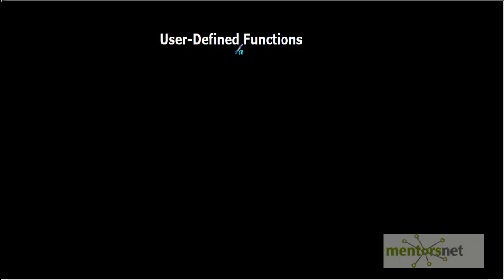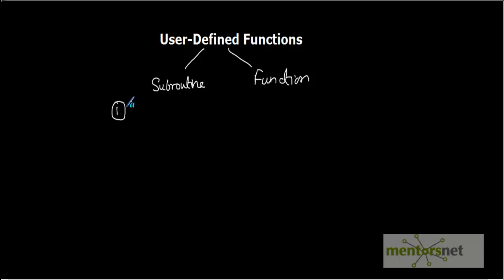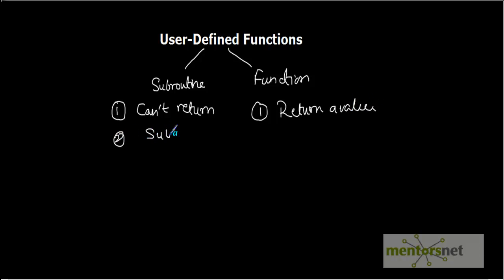In this video we are going to discuss user-defined functions. We can store a function in a function library, and similarly a subroutine can be stored in a function library as well. The major difference between subroutine and function is: a subroutine cannot return any value, whereas a function returns a value. Also, for a subroutine we use the 'sub' keyword, whereas for a function we use the 'function' keyword.